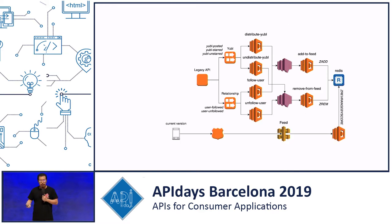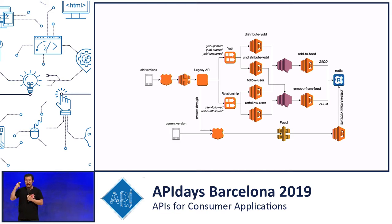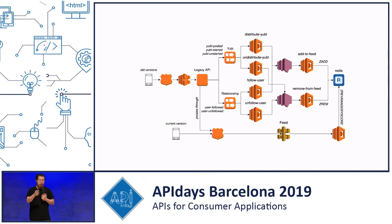Once we have the data in Redis, we can build an API in front of that to allow users to fetch their timeline. We used the same strategy as before — proxying the legacy endpoint to call the new API — so we could deliver improvements to customers earlier without waiting for the mobile and web teams to catch up and start using the new API. Once we knew all clients were using the new API directly, we could then deprecate the old legacy endpoints.